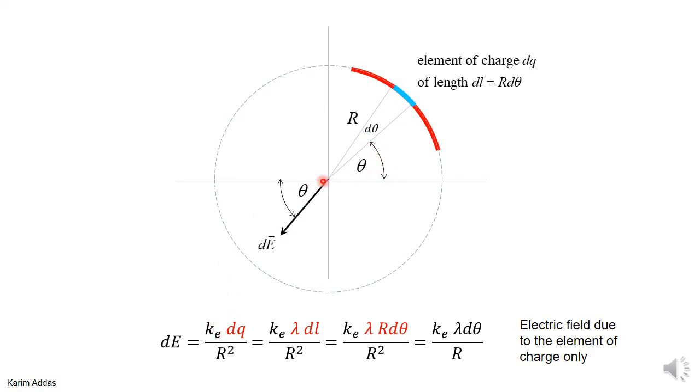So this electric field is the electric field due to a point charge. So we have k_e dQ over R squared. Now, dQ, as we showed in the previous file, we can write as lambda dL, charge per unit length times the length. And dL is the arc length. And dL, from mathematics, we know that dL, the arc length, is R times the angle. So R times d theta. So this way we've written the magnitude of the electric field in a simpler way. By canceling one of the R's here, we get k_e lambda d theta over R. So this is the magnitude of the electric field due to this element of charge here.